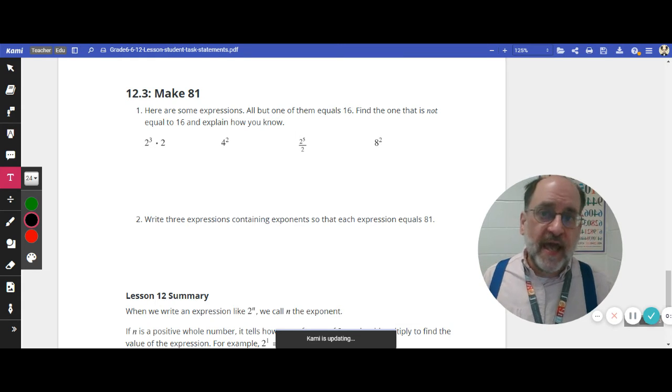We've just started looking at exponents that aren't the number 2 or the number 3. Here are some expressions. All but one of them equals 16. Find the one that is not equal to 16 and explain how you know. I think the best thing to do is just work through all of these. What do these mean?